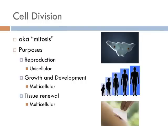Cell division is when one cell divides to become two. In unicellular organisms, this is how they reproduce. They make a copy of their genetic information and then split into two different cells.